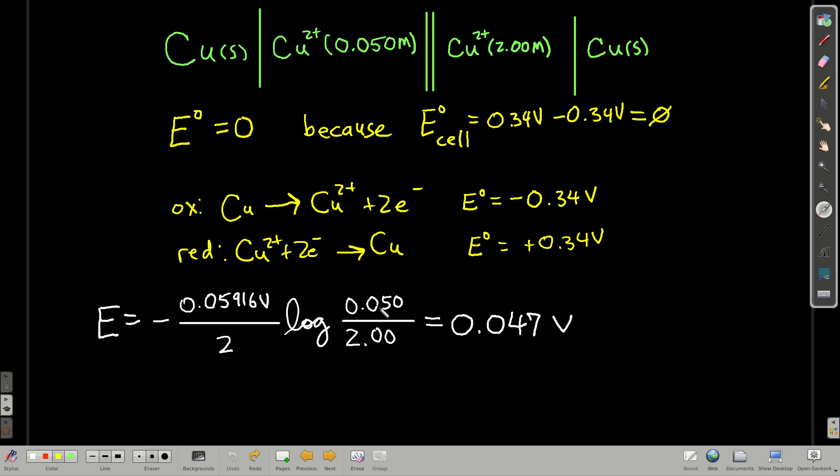And what will happen is this will keep going until the concentrations are equal. Then they'll be at equilibrium. At equilibrium, the concentration in the anode and the cathode will be the same. So this number here will be one. Log of one is zero. And E will be zero. And that's what it means to be at equilibrium.